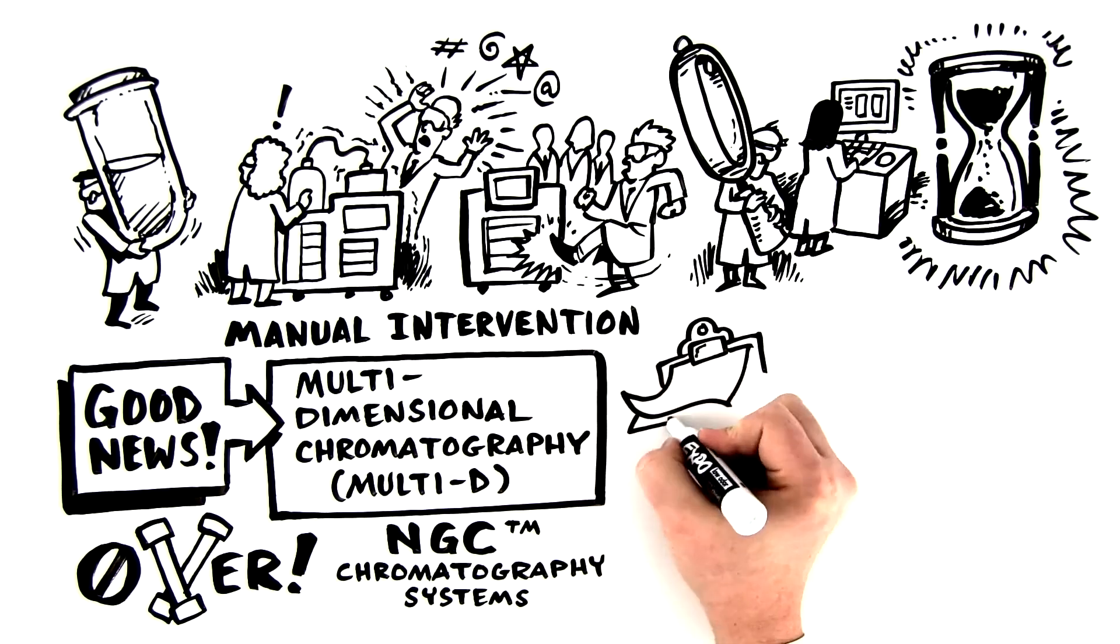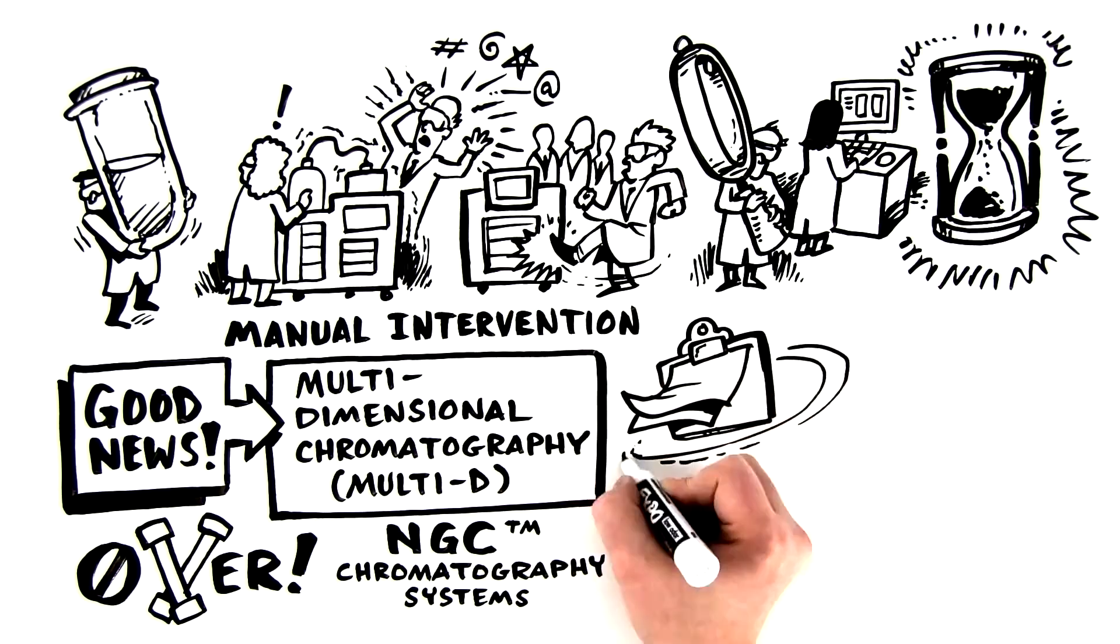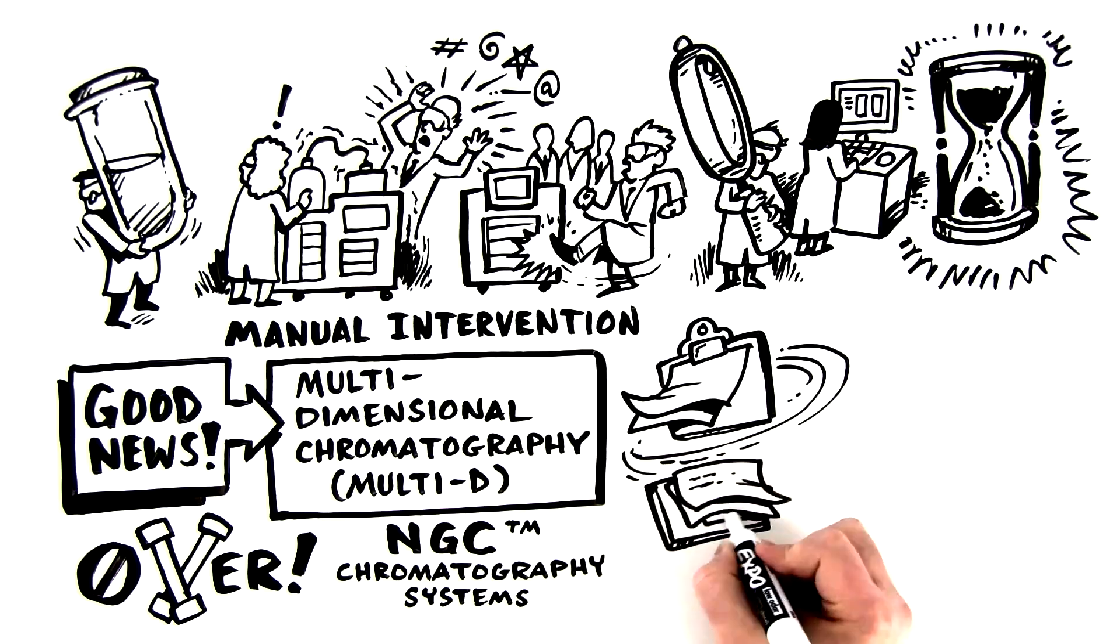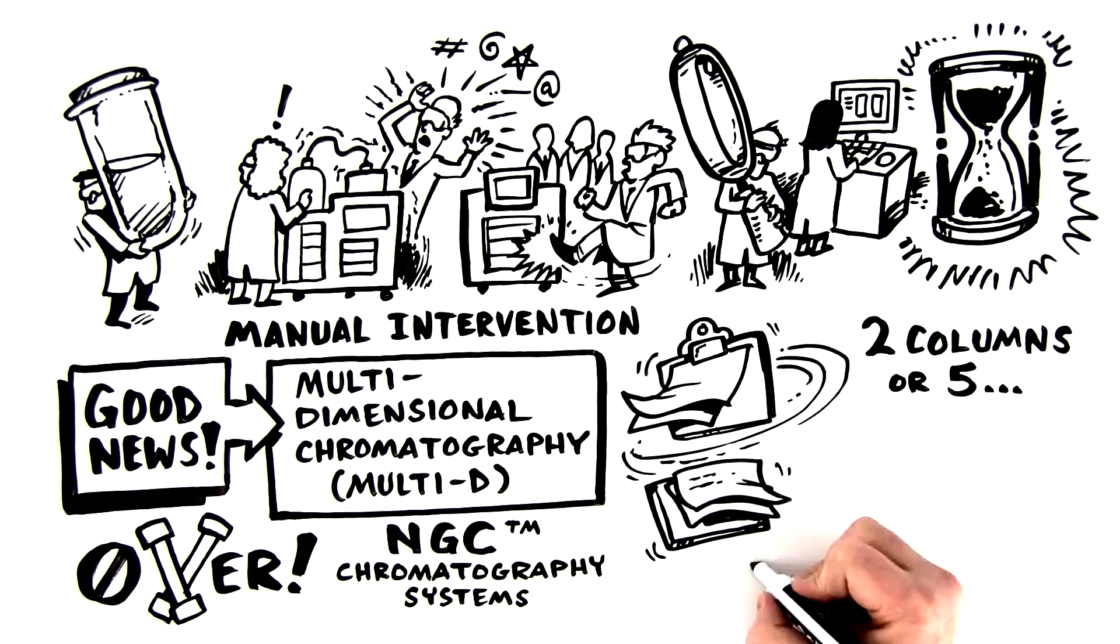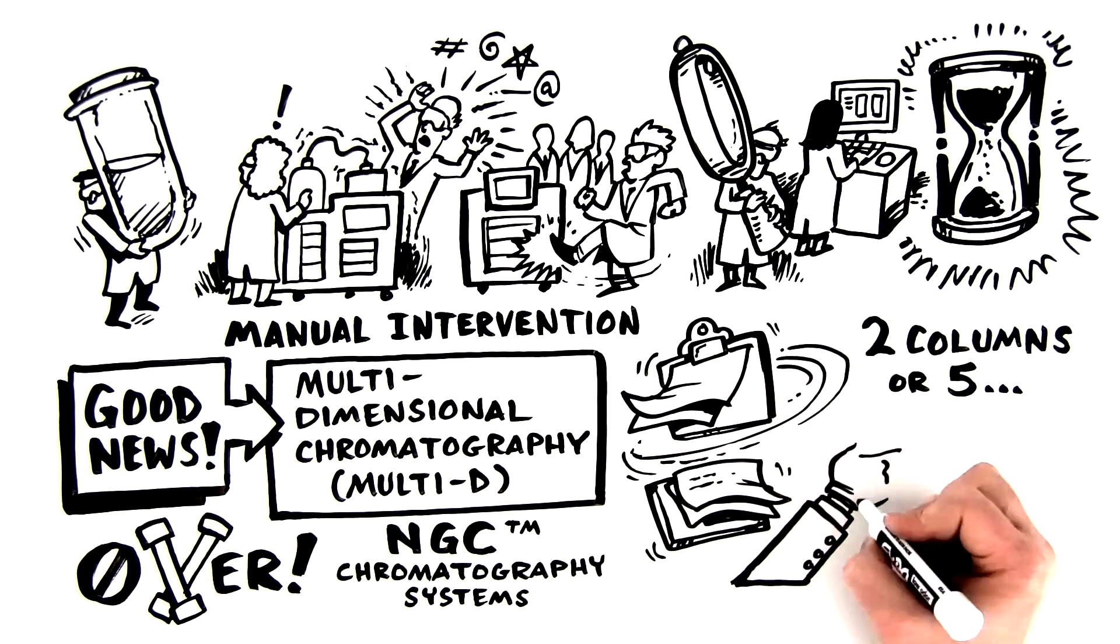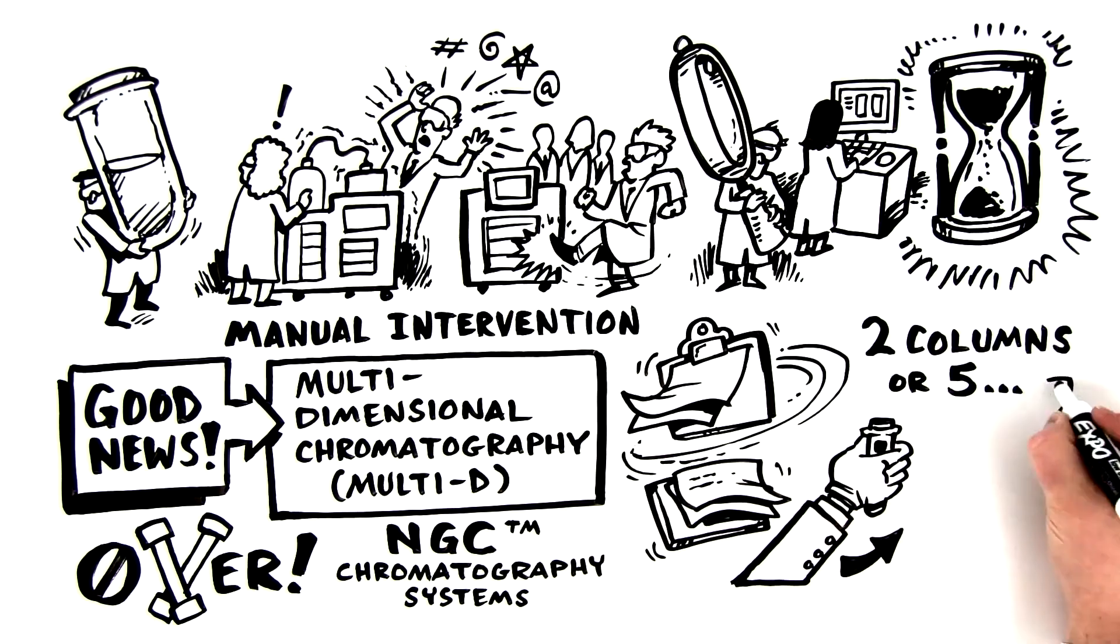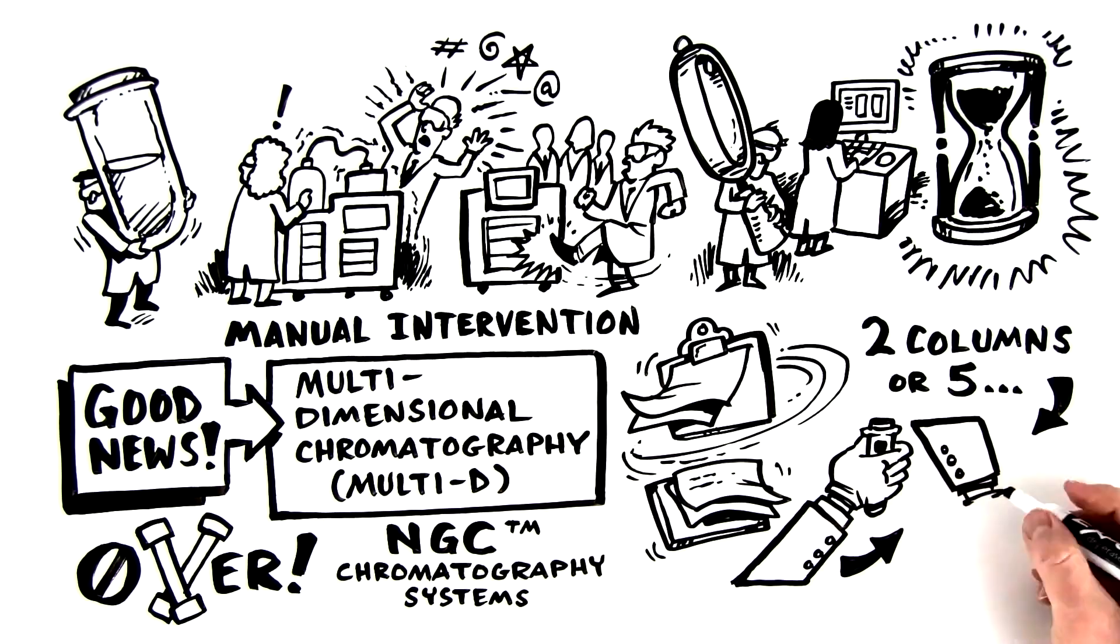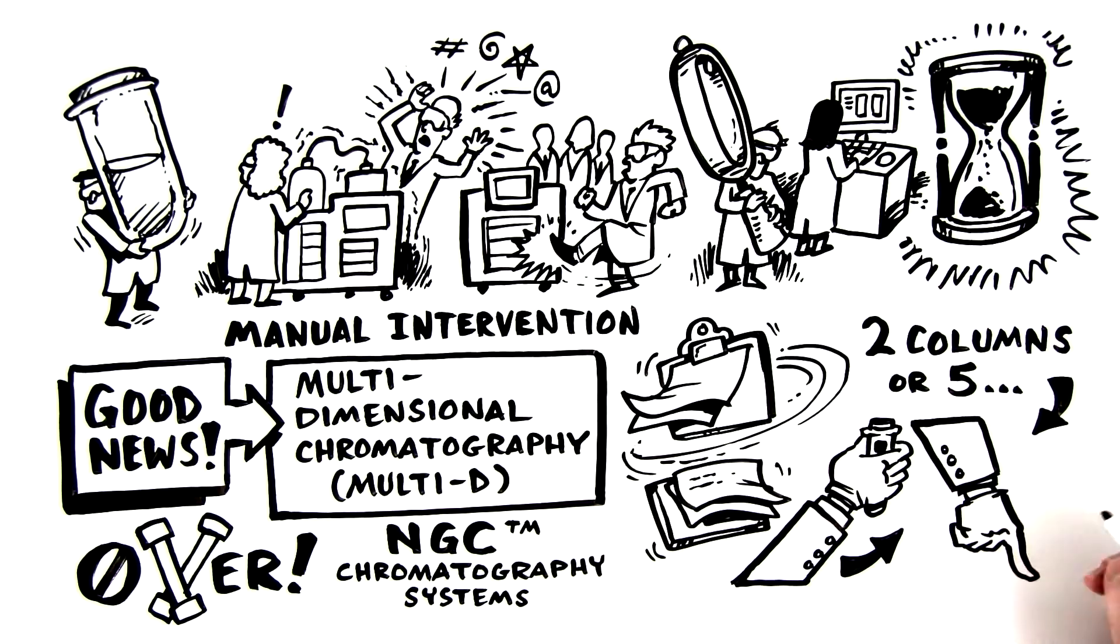The Multi-D workflow slashes through all the busy work of protein purification. Whether researchers use two columns or five, by fully automating the entire process, this simplification of multi-column chromatography takes a long, hands-on process and transforms it into touch-of-a-button purification.